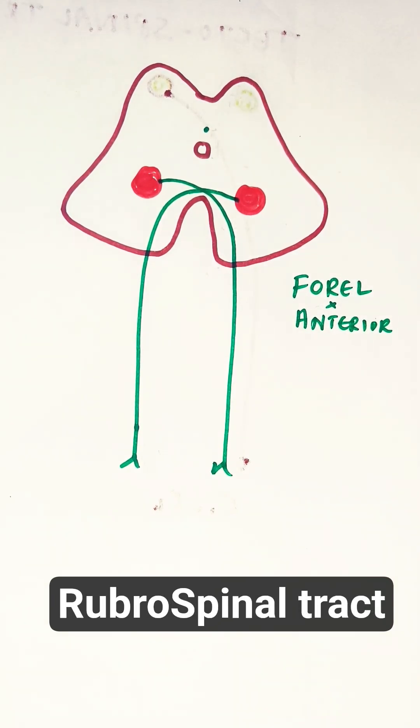Today, we will discuss the rubrospinal tract. It is one of the key extra-pyramidal motor pathways which will help in controlling the upper limb movements.